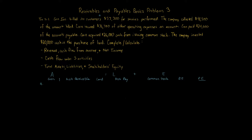Transaction A: Korn billed its customers $57,300 for services performed. No cash, no land, no accounts payable, no common stock. Accounts receivable goes up by $57,300 because we're billing customers. For retained earnings, revenue increases it — the R in WIRE goes to retained earnings — so retained earnings increases by $57,300. The accounting equation balances.